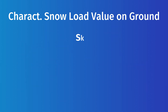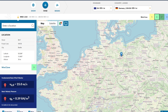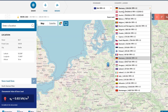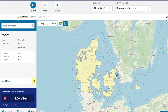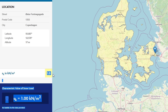The characteristic snow load on the ground is found in the national annex of the country your roof is located in. There is a great online tool made by Gluble Software which calculates the snow load according to the location and national annex — click on the link in the video description. Select the national annex, enter your location, and for a flat roof located in Copenhagen, Denmark, we get a value of 1.0 kN per square meter.